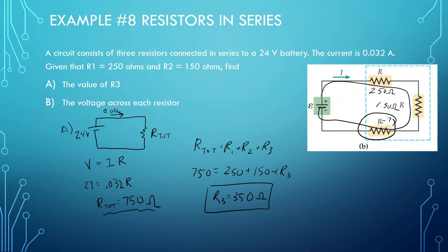Part B asks: what's the voltage across each resistor? We have to find the voltage from here to here for each resistor. V1 equals resistance times current. The current is the same throughout — 0.032 — and the resistance is 250. So 250 times 0.032 gives us 8 volts.